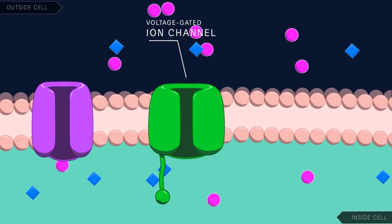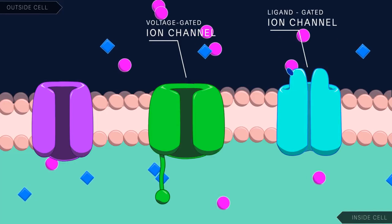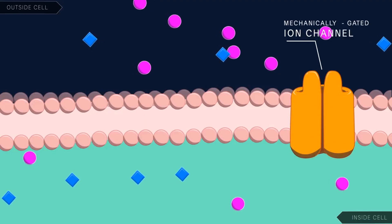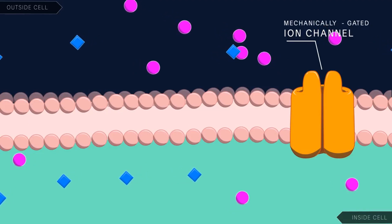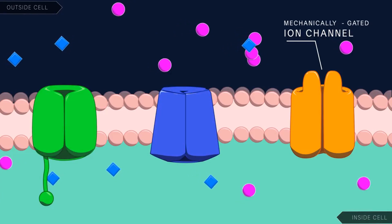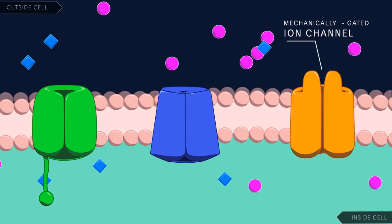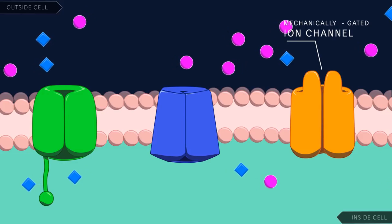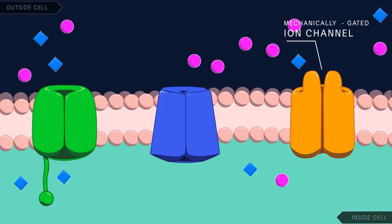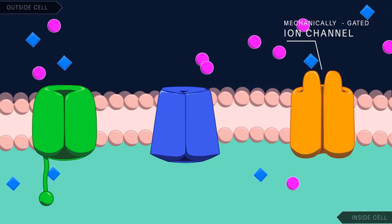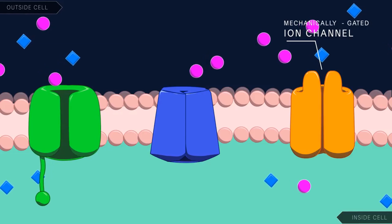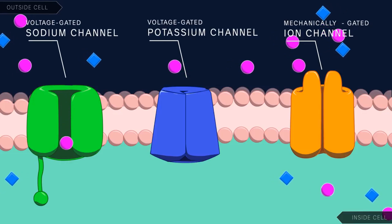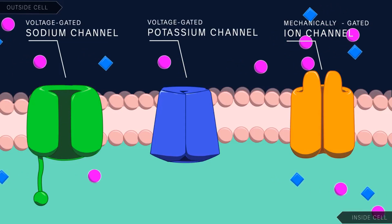On the other hand, ligand-gated ion channels are triggered to open when they are bound by a specific molecule. Mechanically-gated ion channels open in response to physical forces such as changes in length or changes in pressure. Most ion channels are selectively permeable, meaning that they only allow one or a small subset of ions to pass through. Voltage-gated ion channels, for example, typically only allow a single ion to cross the membrane when they open. This means that we need separate channels for each ion — i.e., voltage-gated sodium channels as well as voltage-gated potassium channels.